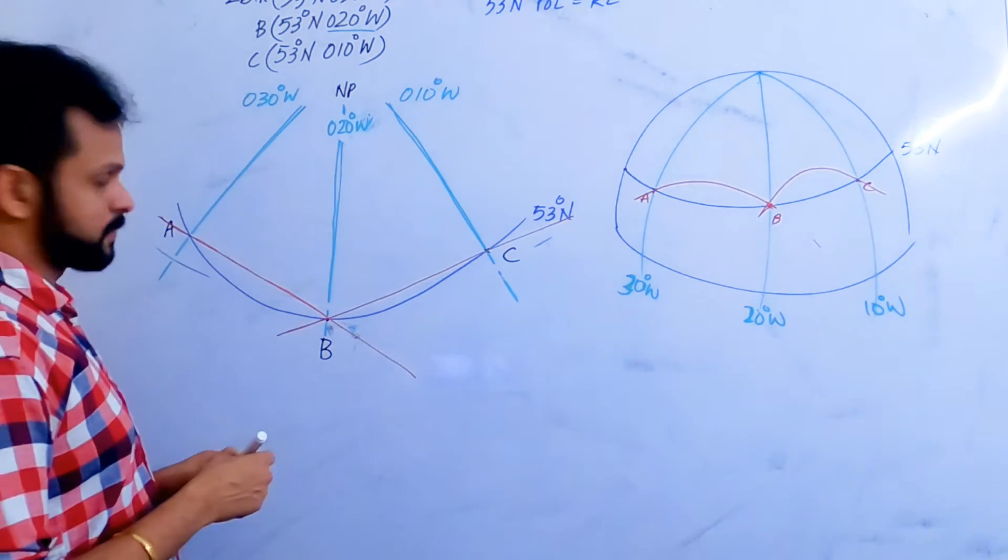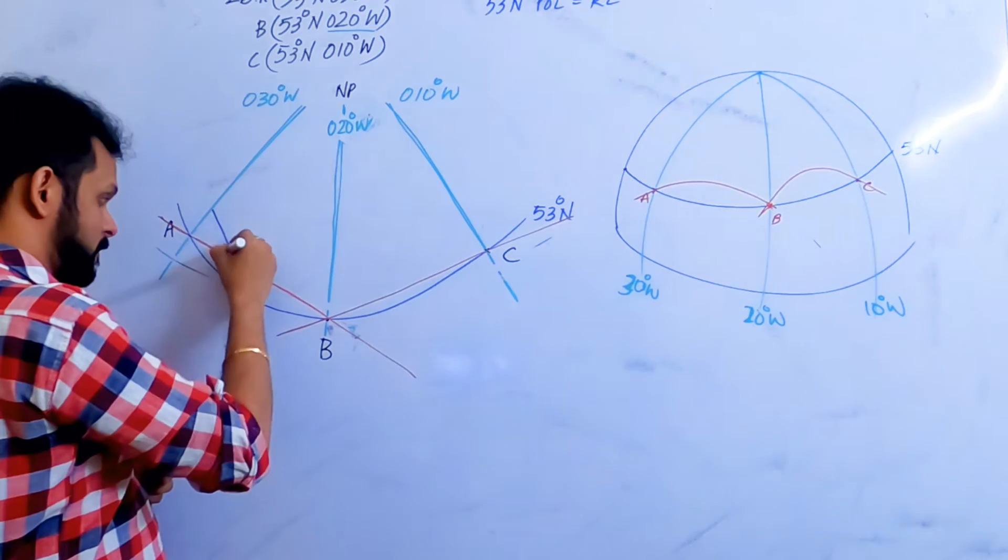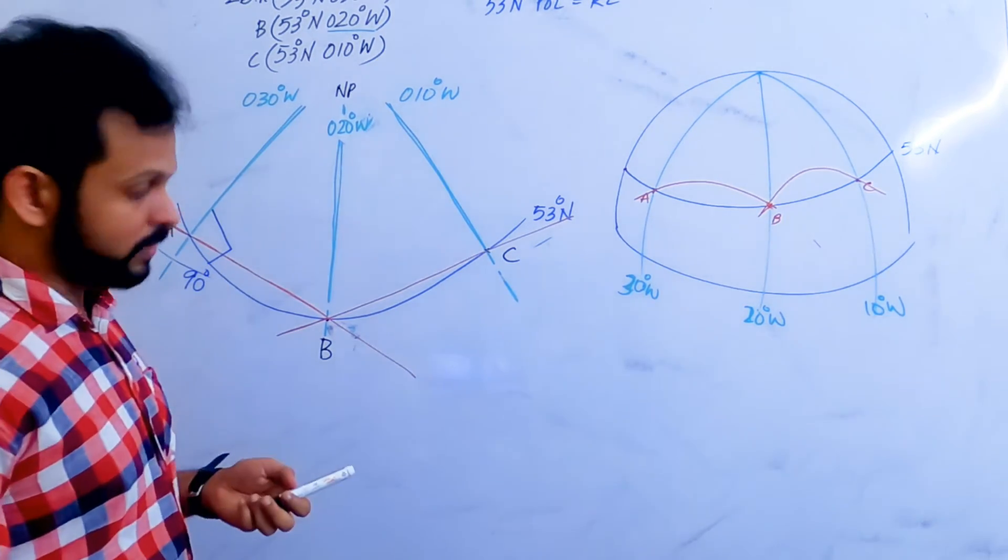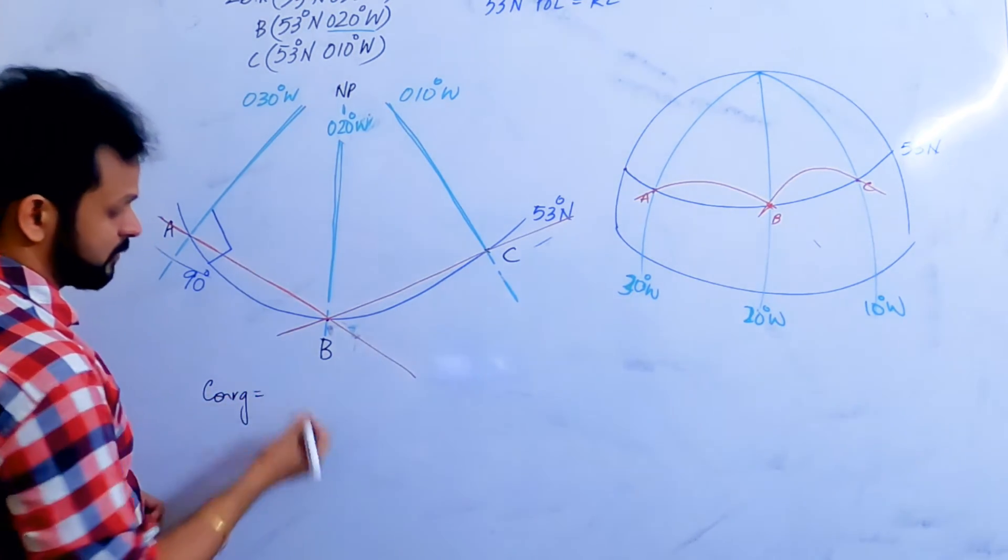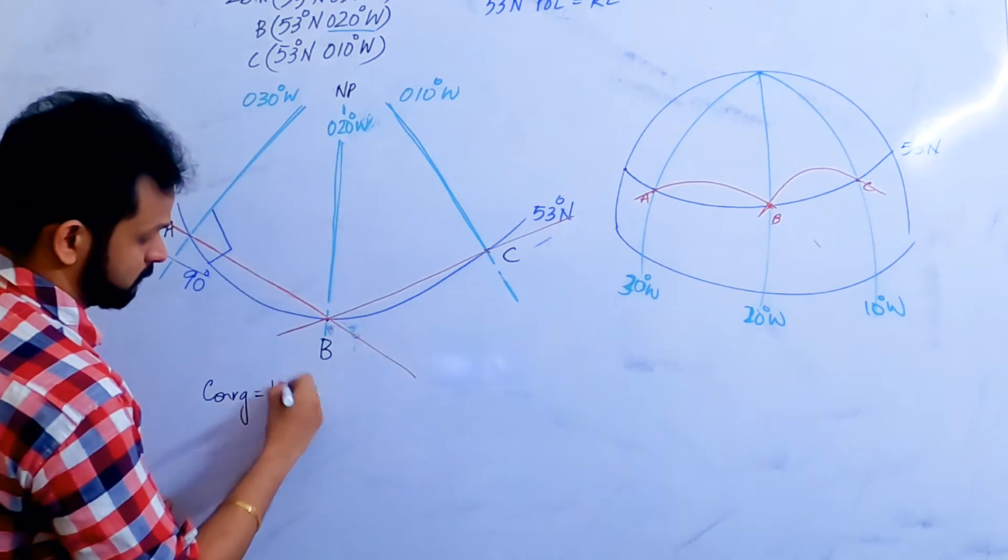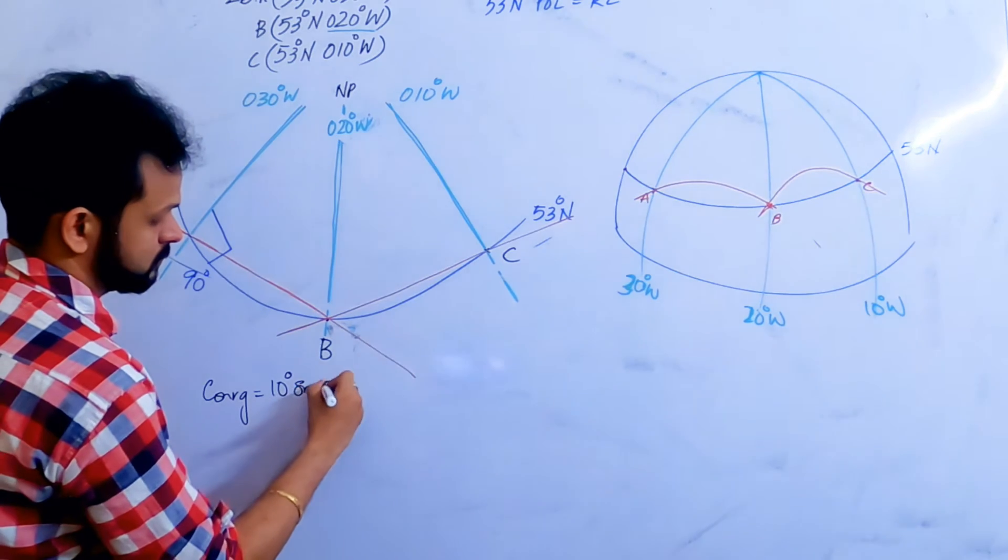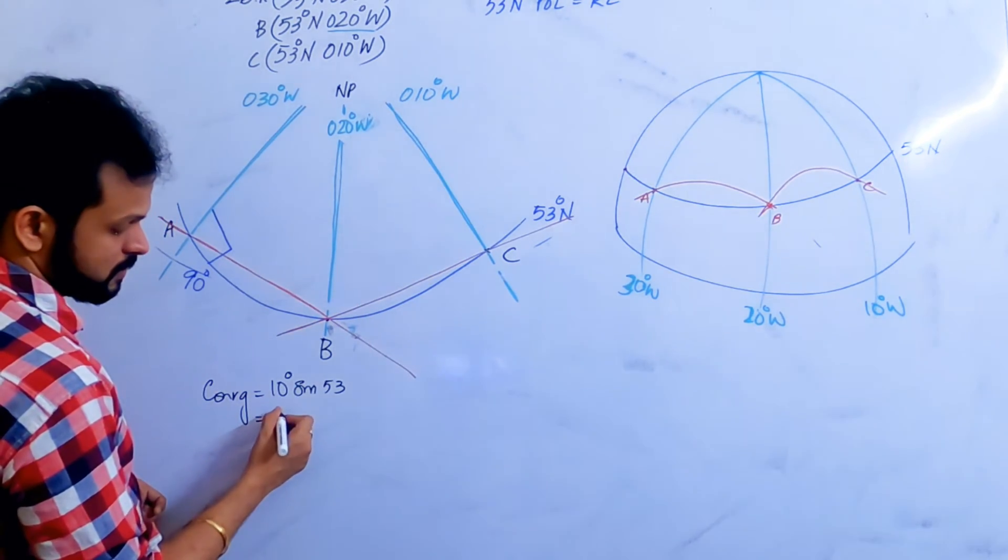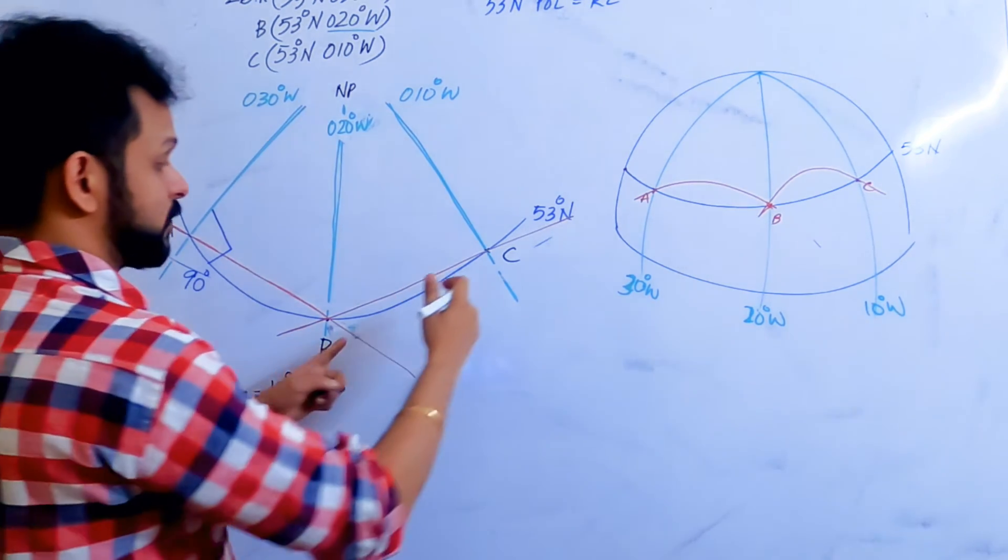Just due to this conversion angle. This angle is 90 degrees. You found the convergency, right? Convergency is chilong in degrees. What is the chilong in degrees here? In this particular case, it is 10 degrees divided by sin 53. How much is that? It's 7.9. You can take it as 8 degrees.